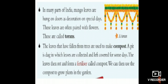Leaves that have fallen from trees are used to make compost. A pit is dug in which leaves are collected and left covered for some days. These leaves then rot and form fertilizers called compost. We can use them to grow plants in the garden. These fallen leaves are kept in a pit and after some days they become compost, used as fertilizers for new plants to grow.